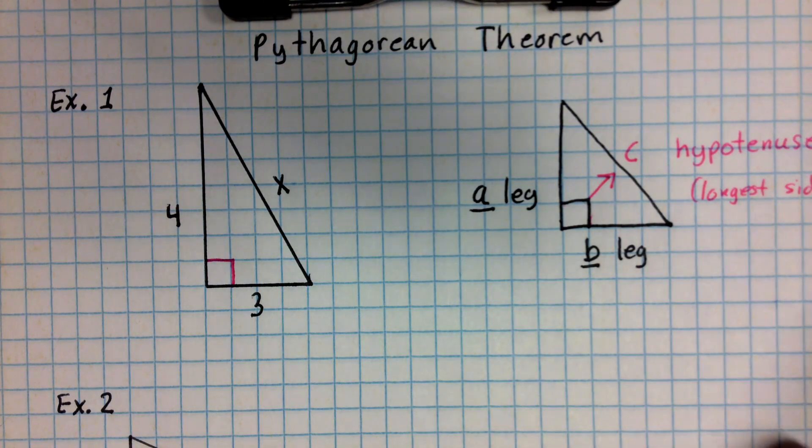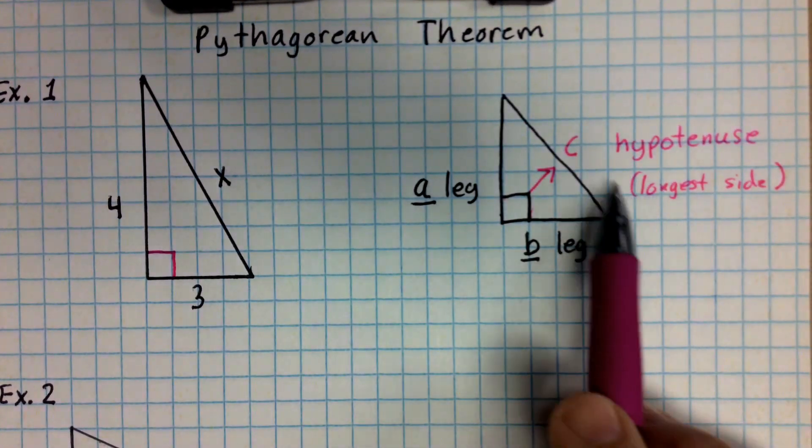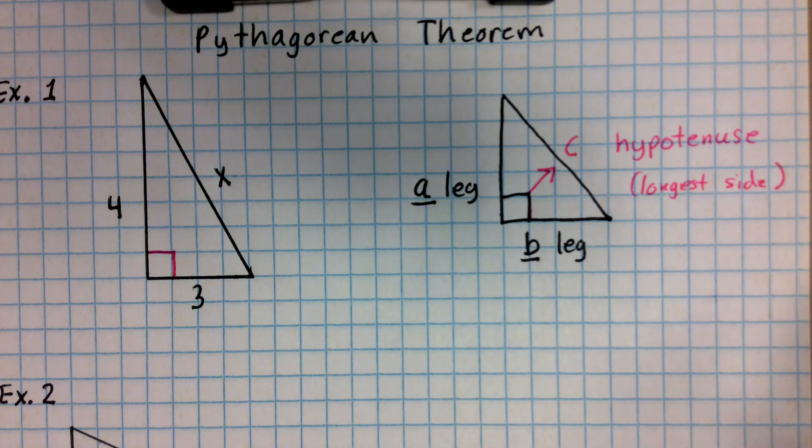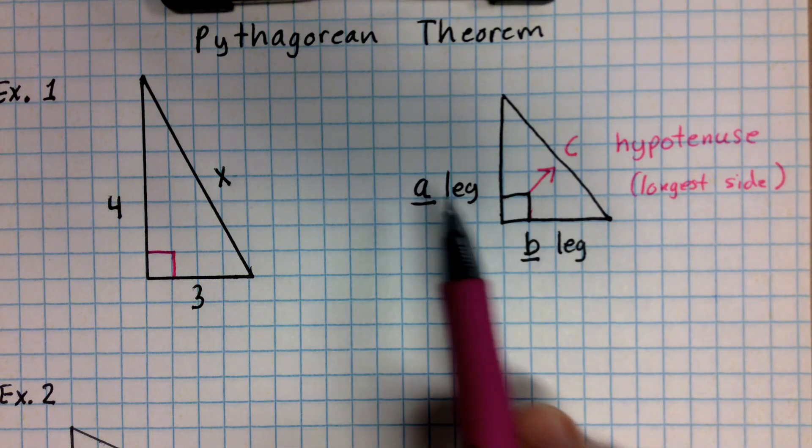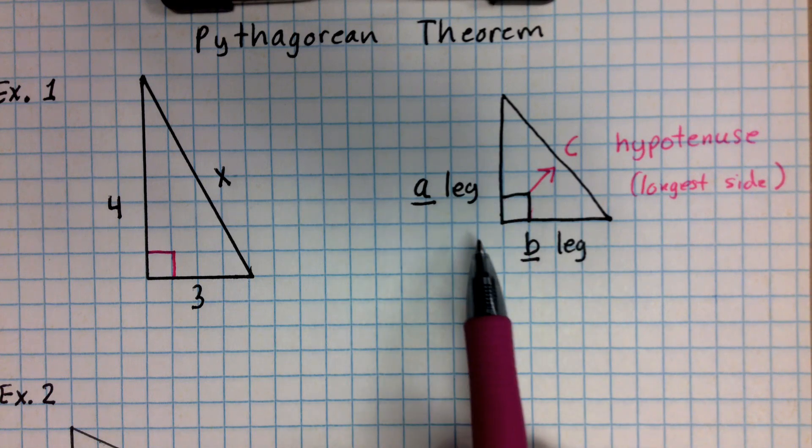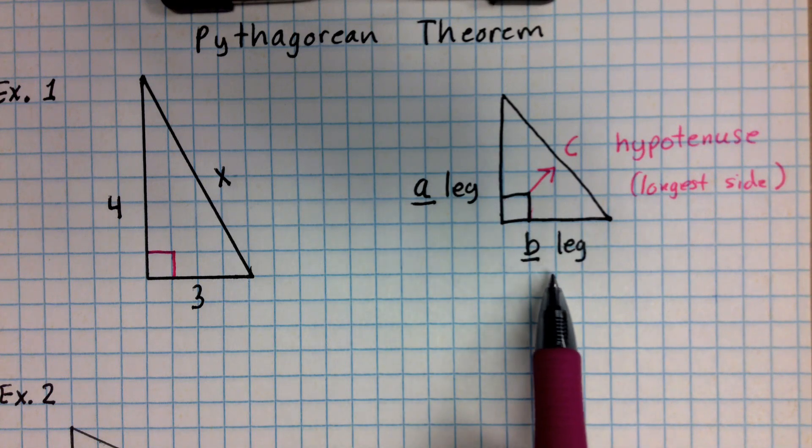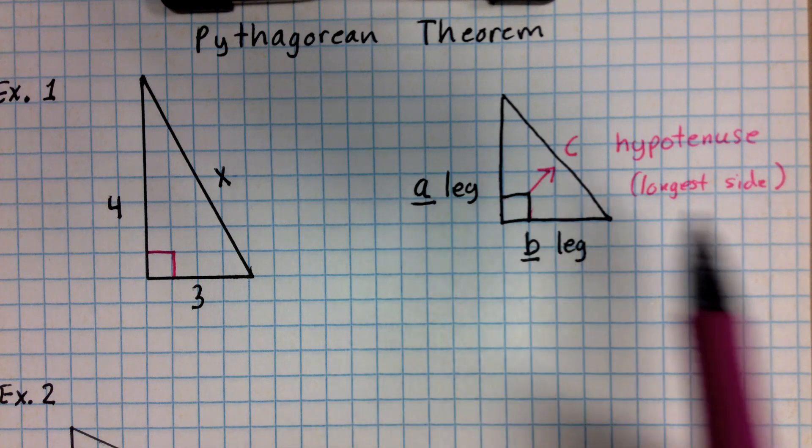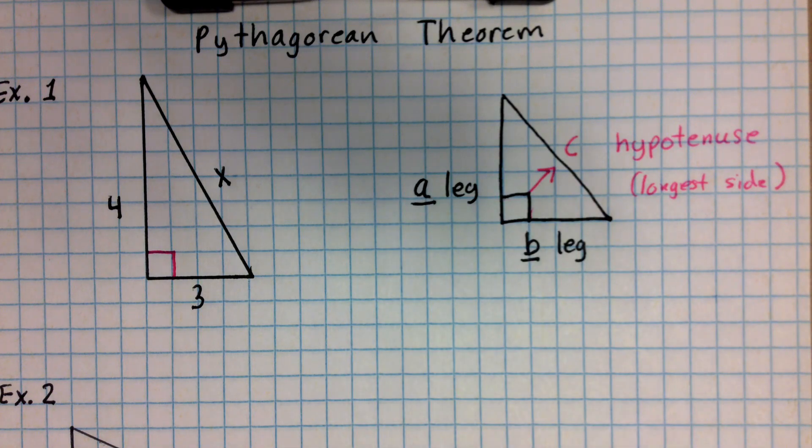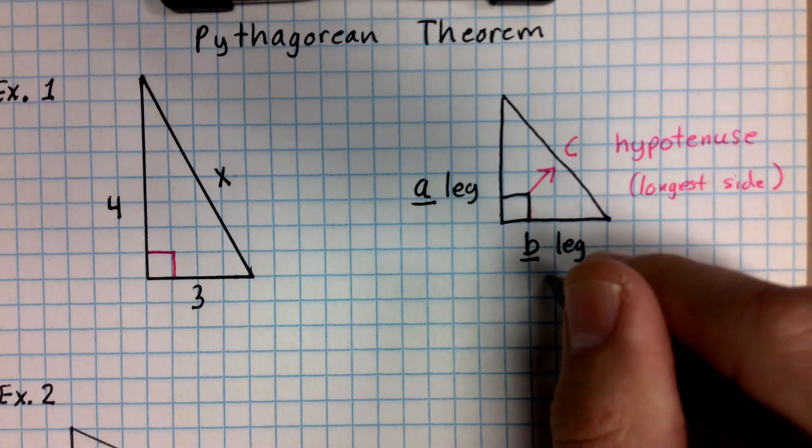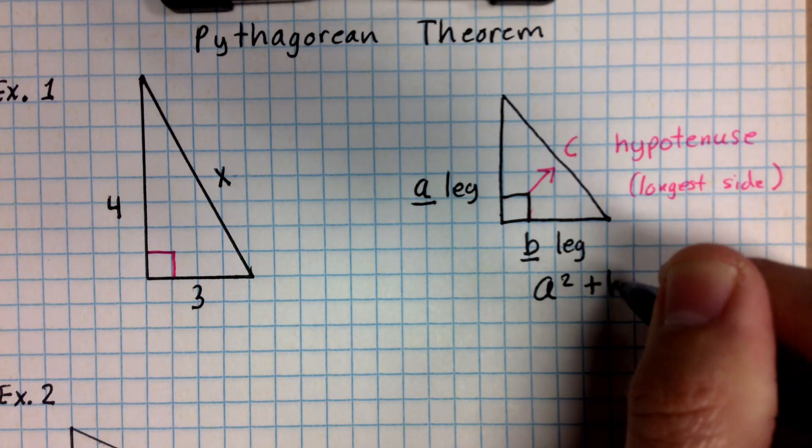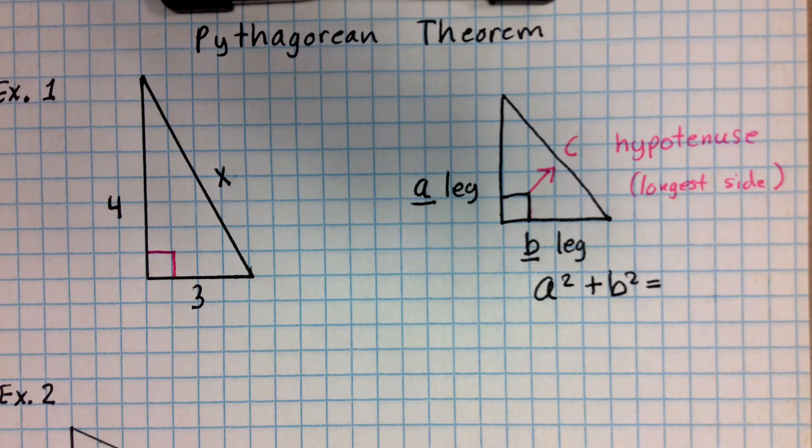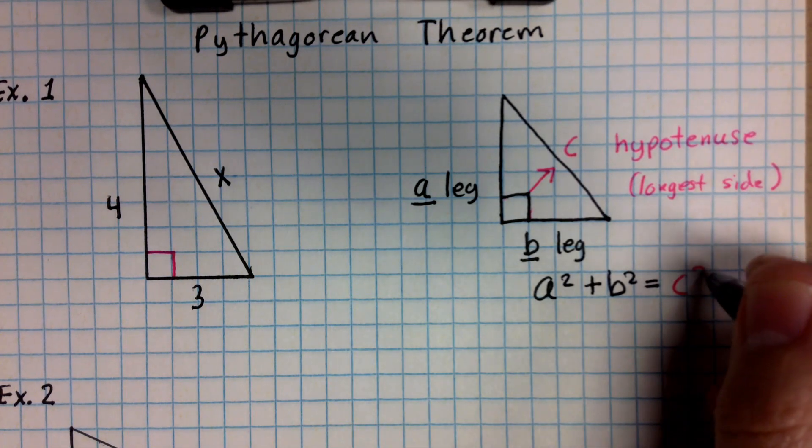Now the reason that makes a difference is you cannot mix up C with A or B in the formula, or you'll get it wrong when you try to solve the problem. But A and B really don't matter. As long as one of the sides you got labeled as A and one is labeled as B, it doesn't matter. You could call the bottom A and the left side B. You'll still get the same answer because they're going to be added. And here's the formula. The formula will be A squared plus B squared is equal to C squared.